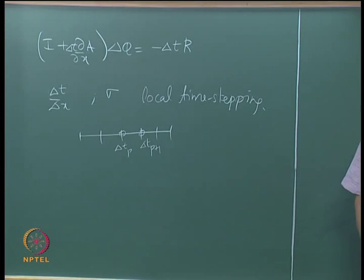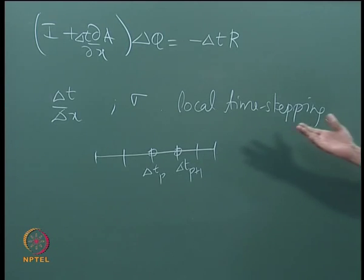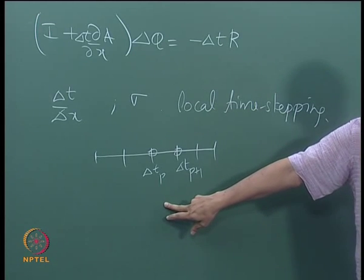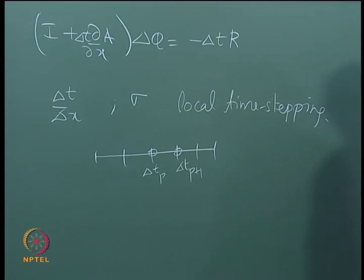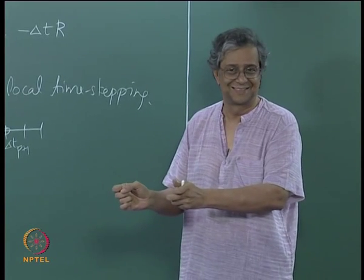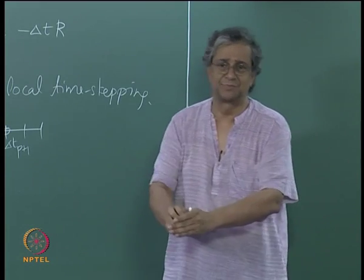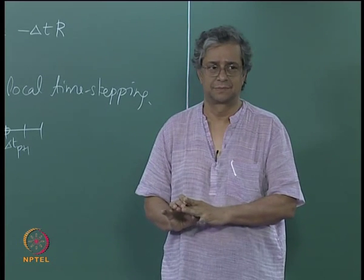What could be the potential problems? We do not know if it converges to the right solution. Anyone who studied mathematics would note that we do not have uniform convergence and we are doing something unusual. We are saying: if there is a spot where the solution converges very quickly to the steady state, let it go. Why should it be held up by something that is converging at a slow rate?